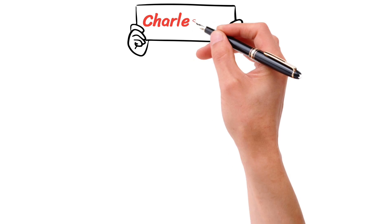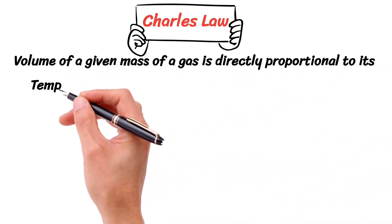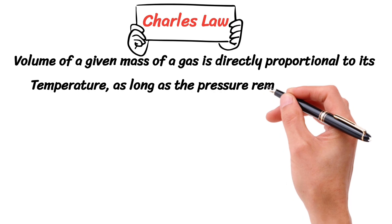According to Charles's Law, the volume of a given mass of a gas is directly proportional to its temperature as long as pressure remains constant.